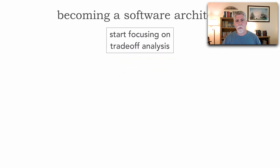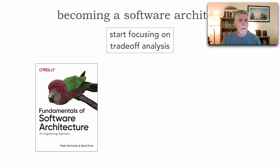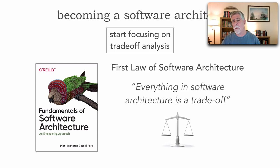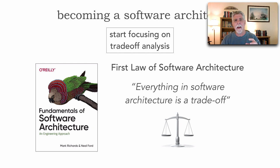Trade-off analysis is one of the things an architect primarily does — they look for trade-offs everywhere. In my book that I wrote with Neil Ford, The Fundamentals of Software Architecture, published in February 2020, we coined the first law of software architecture, which states: everything in software architecture is a trade-off. One of the aspects of starting to become a software architect is to look for and recognize these trade-offs.